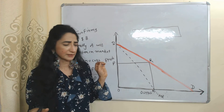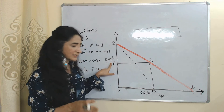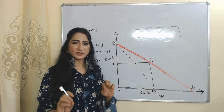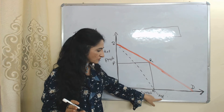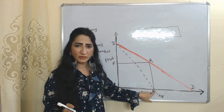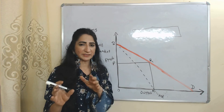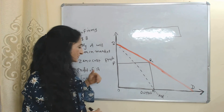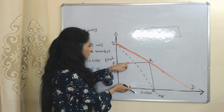Since A is the only firm in the market, it is taking monopoly price. Price of A is OP, equal to monopoly price, and output of A is OM. We assume marginal cost is zero. At point M, marginal revenue equals marginal cost — that's why it is the profit maximization point. At this point, firm A is getting profit equal to area OPRM.